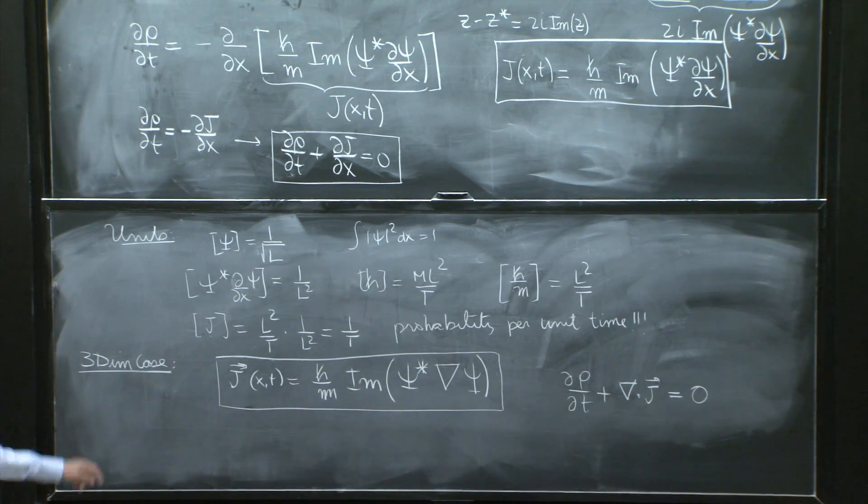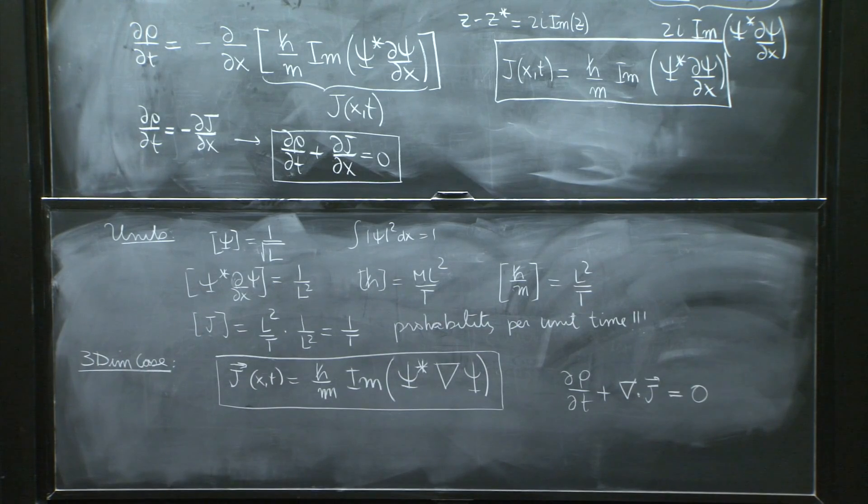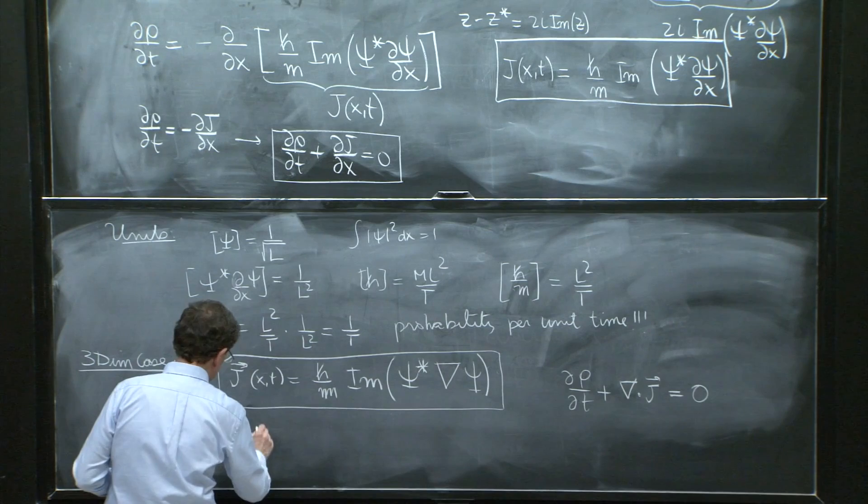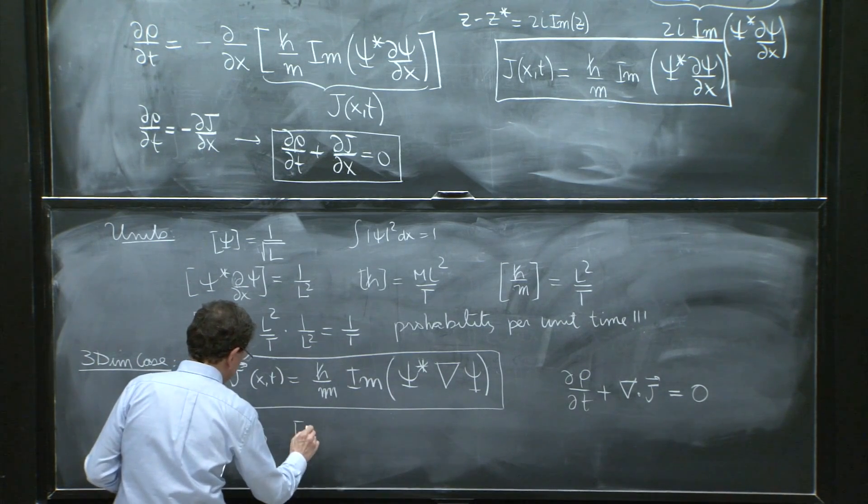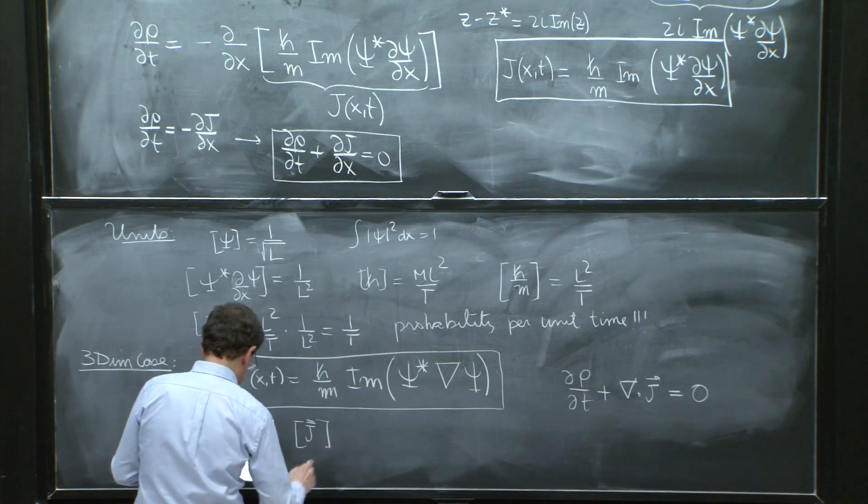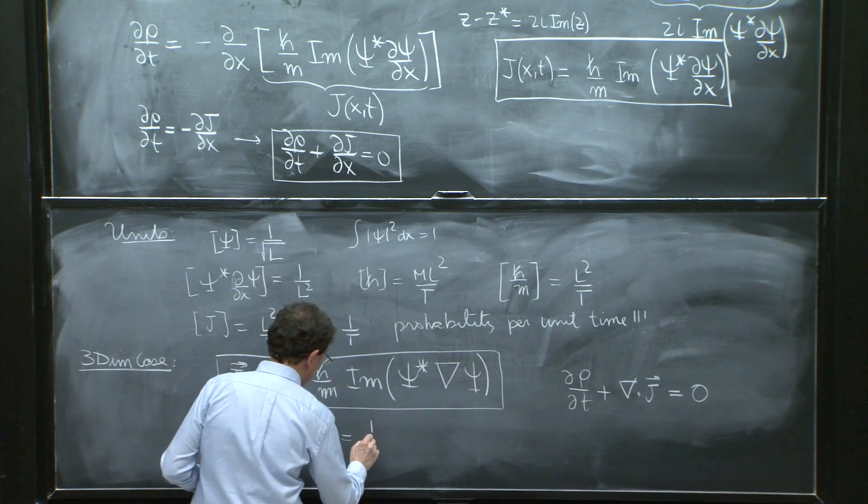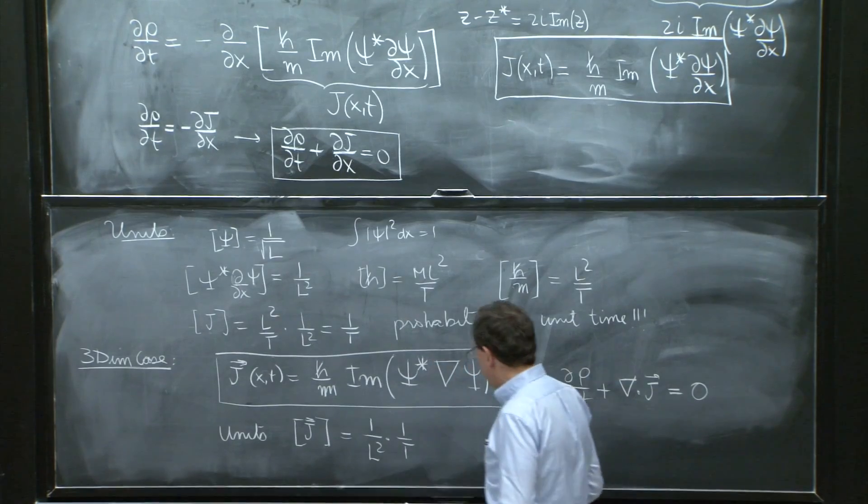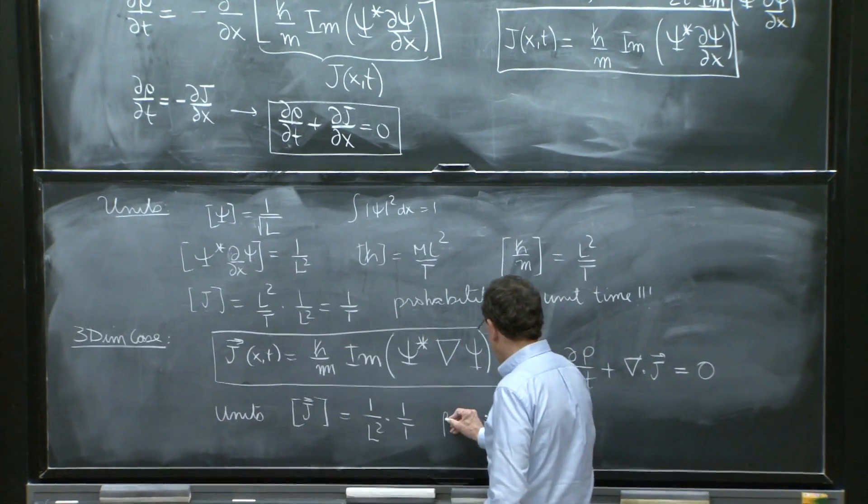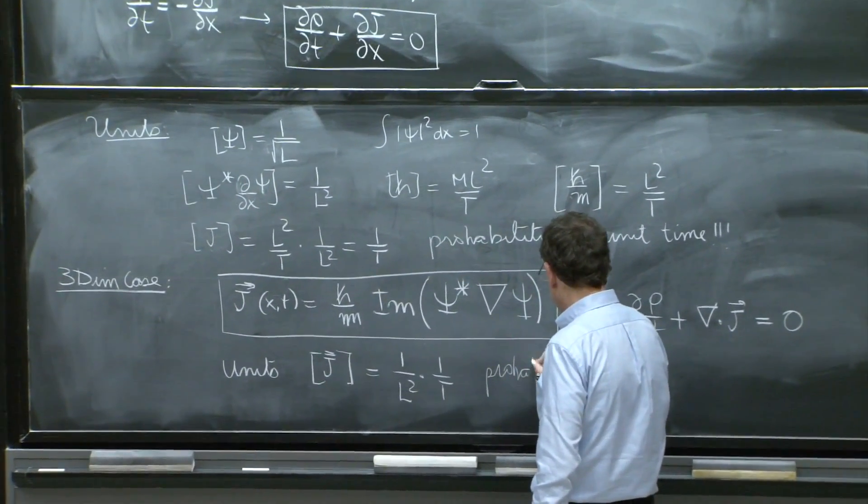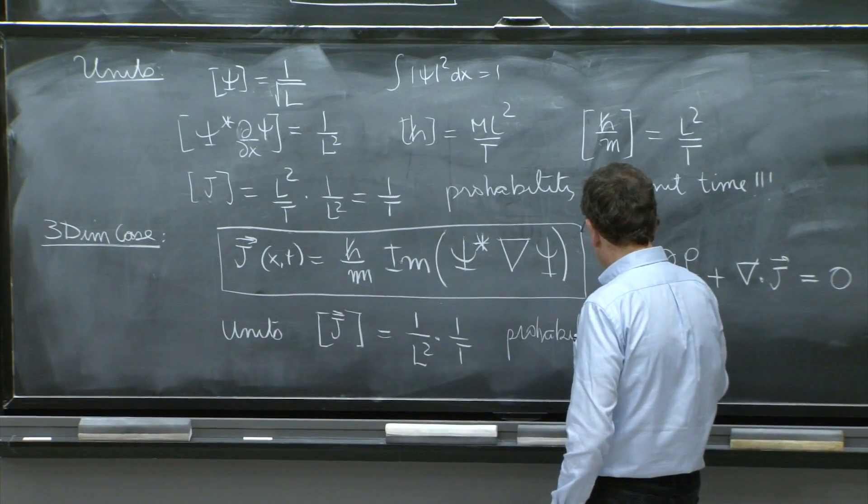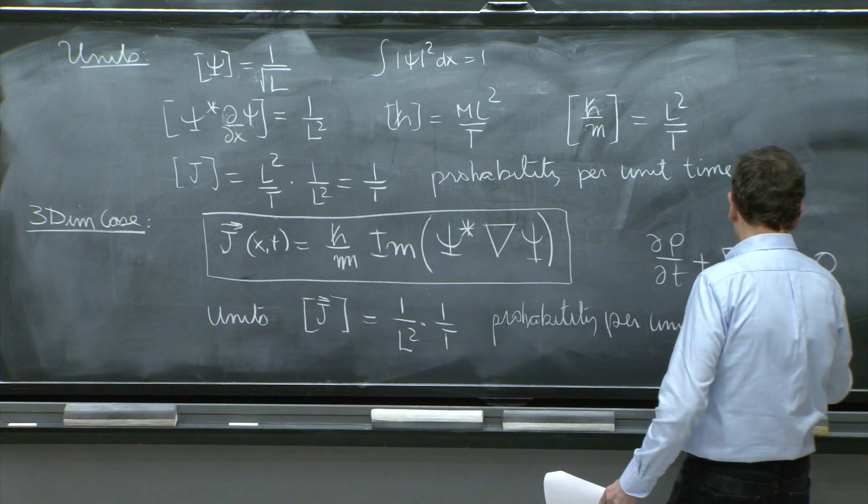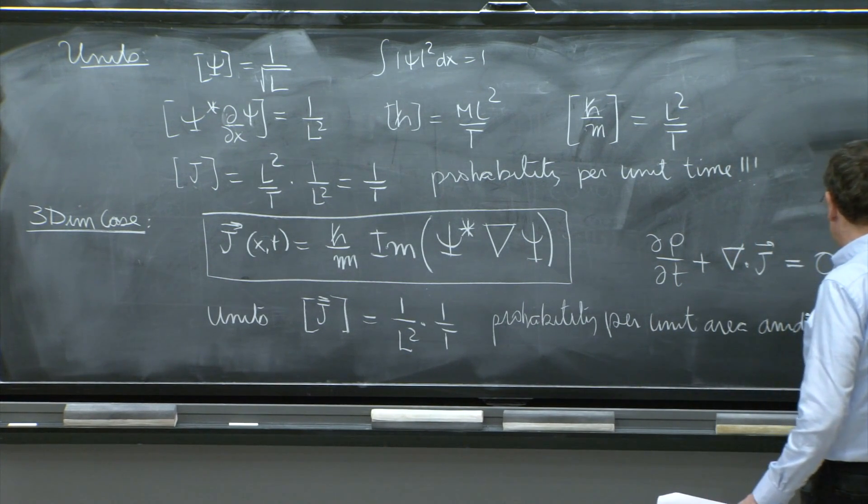So one last thing here, it's something also you can check. The units here of j is 1 over L squared times 1 over t. So probability, per unit area, and unit time.